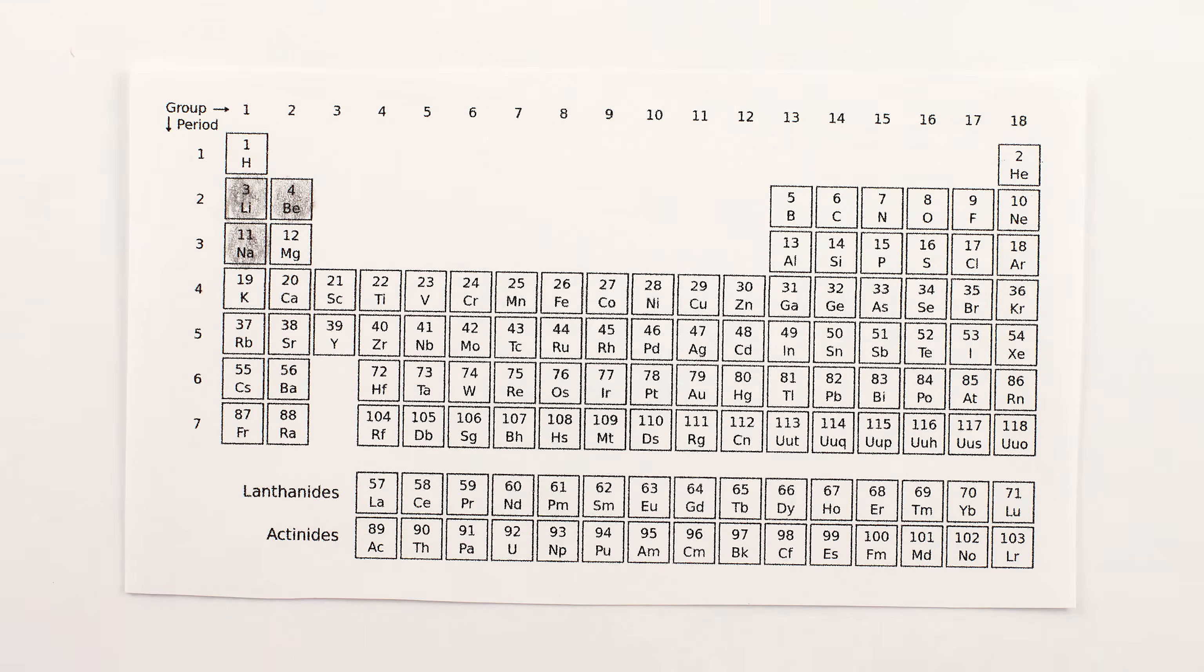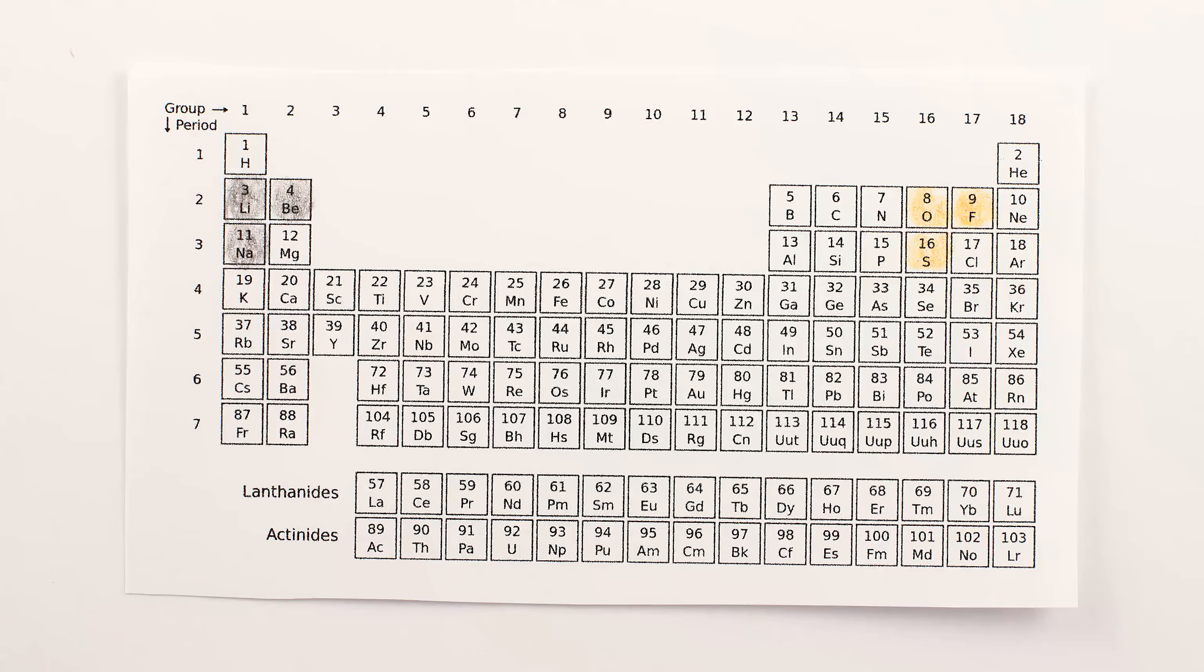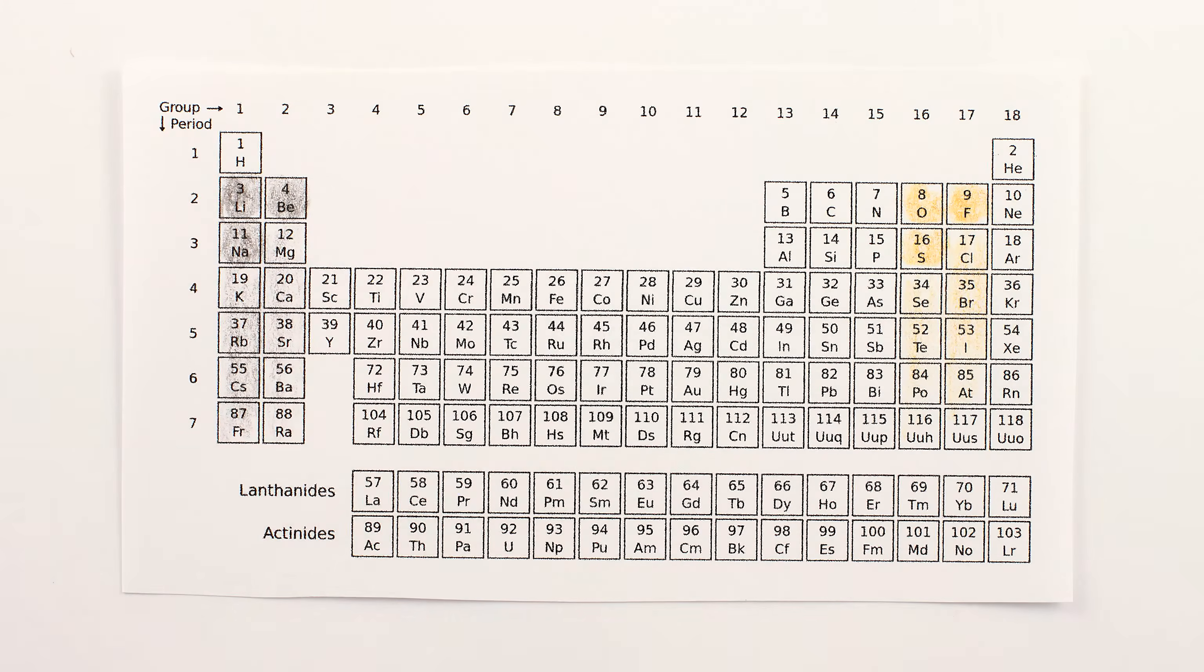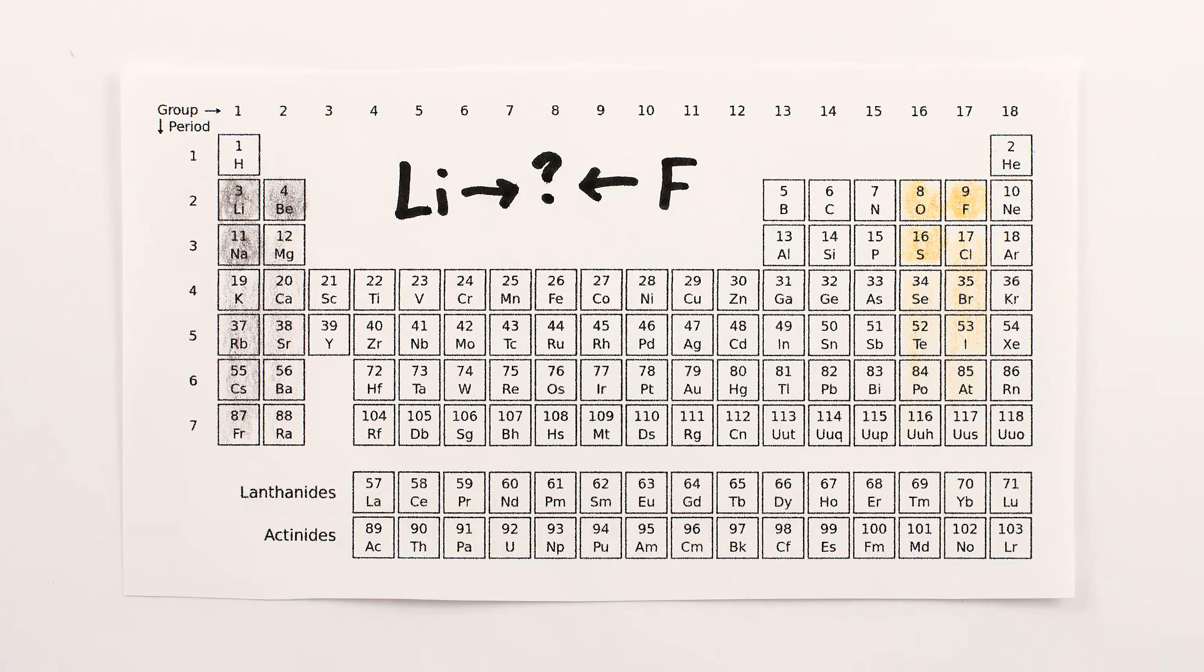Metals from the left side of the periodic table like lithium, sodium, and beryllium really want to lose electrons, while atoms from the right side like fluorine, oxygen, and sulfur really want electrons. And atoms close to the top are a lighter weight, so we can just slap together lithium and fluorine and make a perfect battery, right?